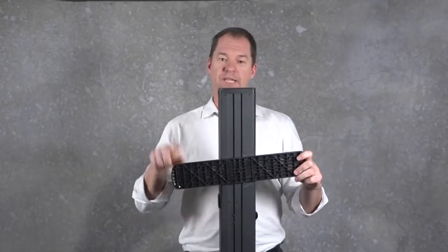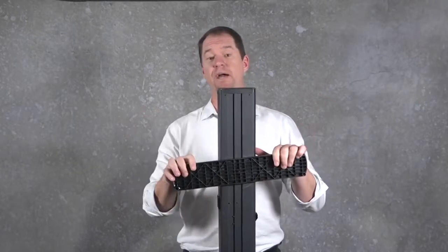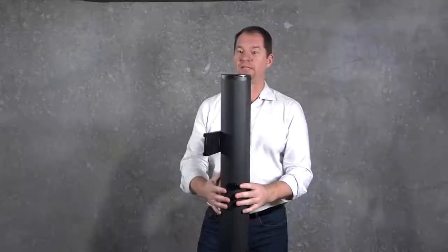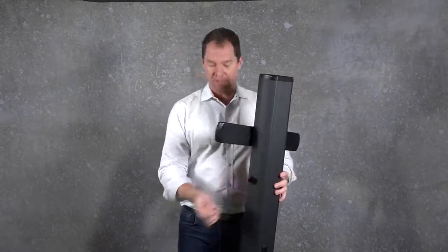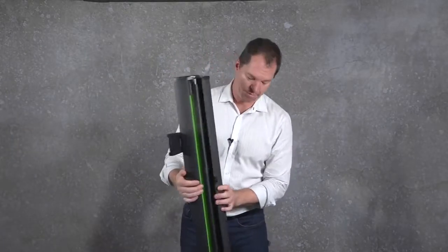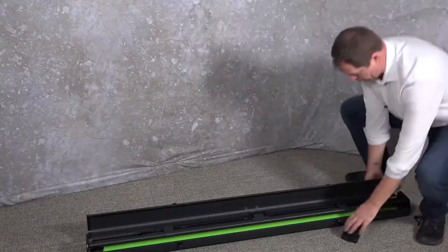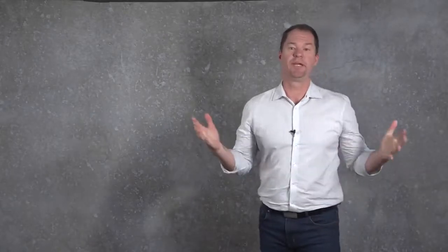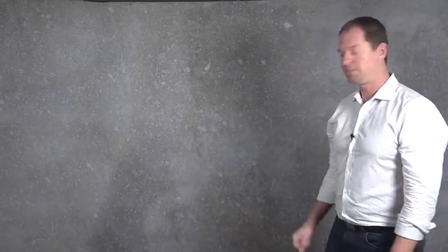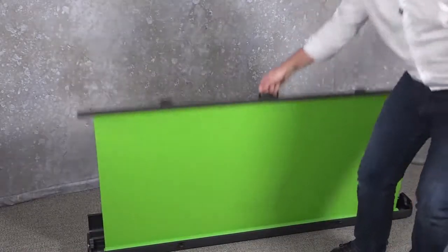There is a latch here on the front. Make sure you flick these latches open. Once the latches are flicked open, open it up. Now you can simply grab the handle and pull the green screen straight up. It'll stand by itself and stay upright by itself as well.